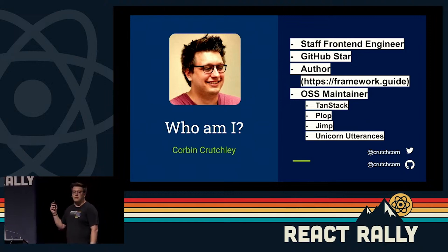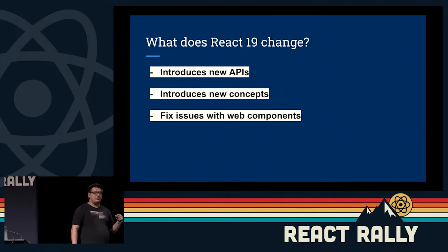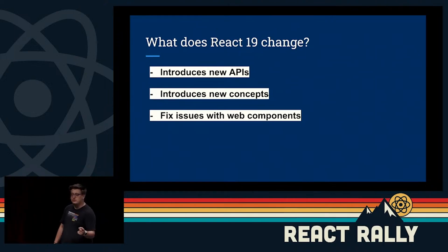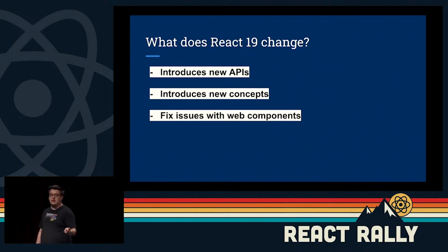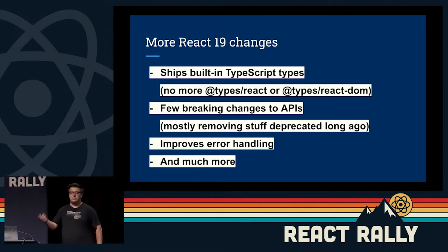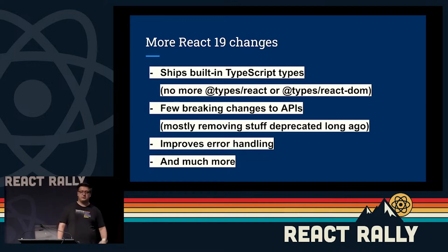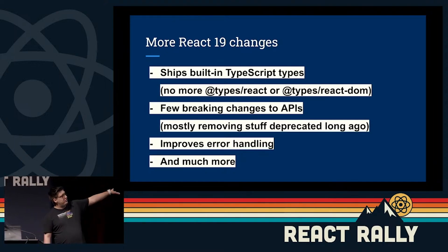We're going to be talking about React 19. React 19 is not out yet, but it changes a couple things. It should be out soon — they're in release candidate stage. It's going to change some APIs, add some new APIs, introduce some new concepts, and fix some issues with web components. It's going to drop the need for forwardRef, which is awesome. It also allows you to ship TypeScript types built-in — no more @types/react, no more @types/react-dom. There are a few breaking changes to existing APIs, a lot of stuff is deprecated, and there's better improved error handling.